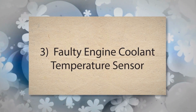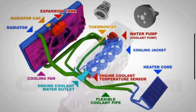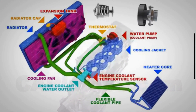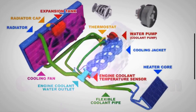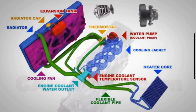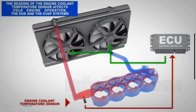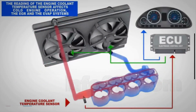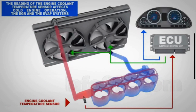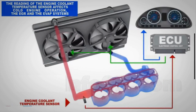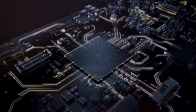3. Faulty engine coolant temperature sensor — the engine coolant temperature sensor measures the temperature of the coolant and sends this data to the engine control module. If the sensor is faulty and provides incorrect readings, the ECM might think the engine is not reaching the proper operating temperature, even if it is. This discrepancy can cause the P0128 code to be set.